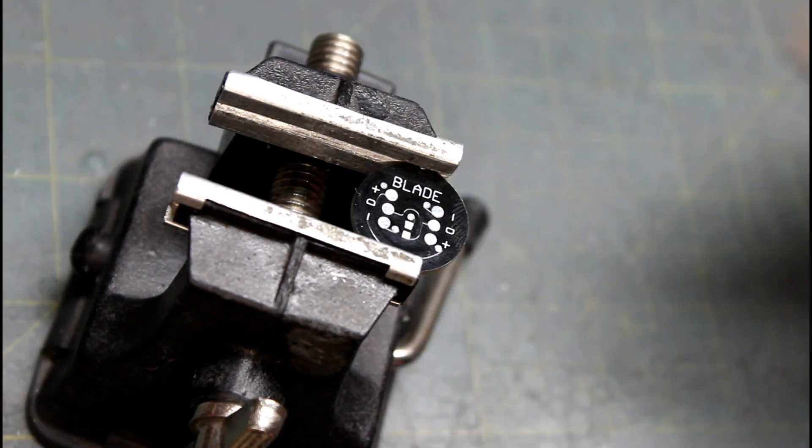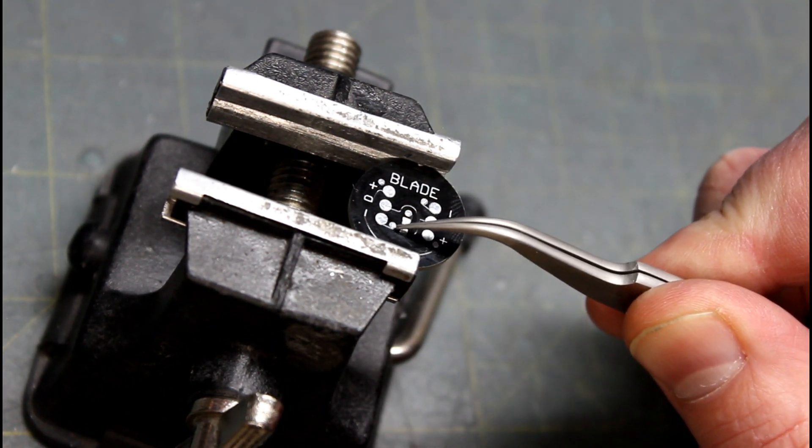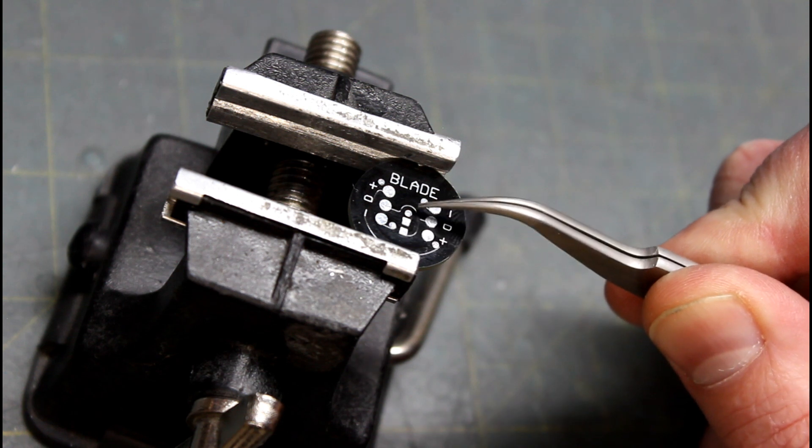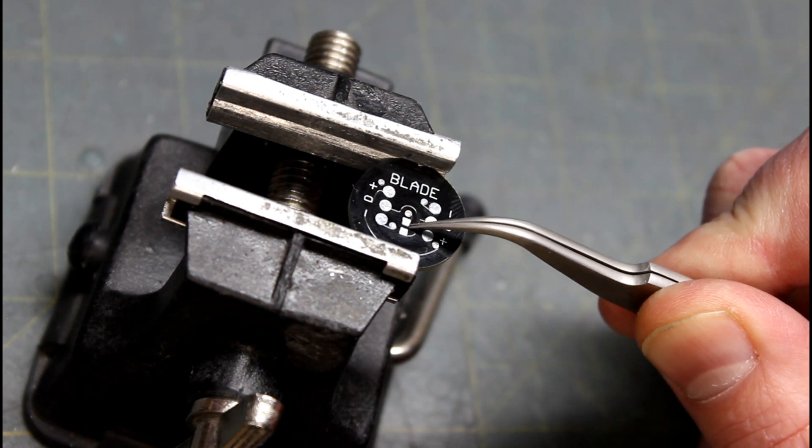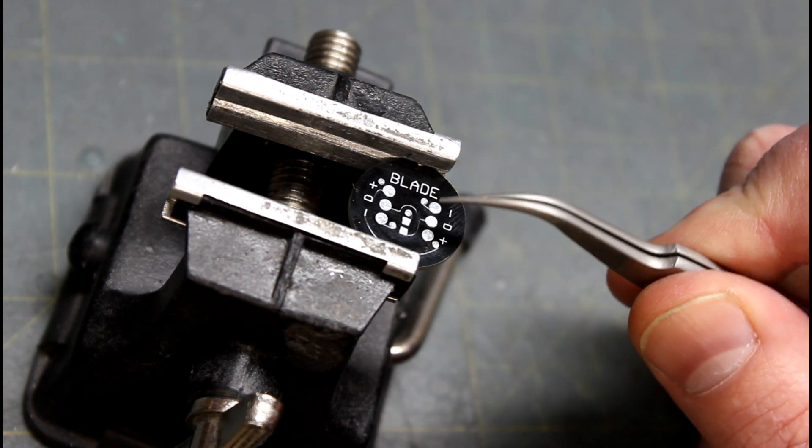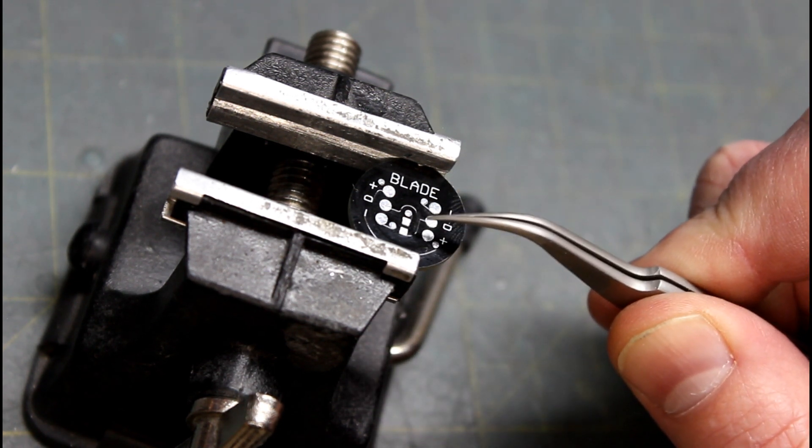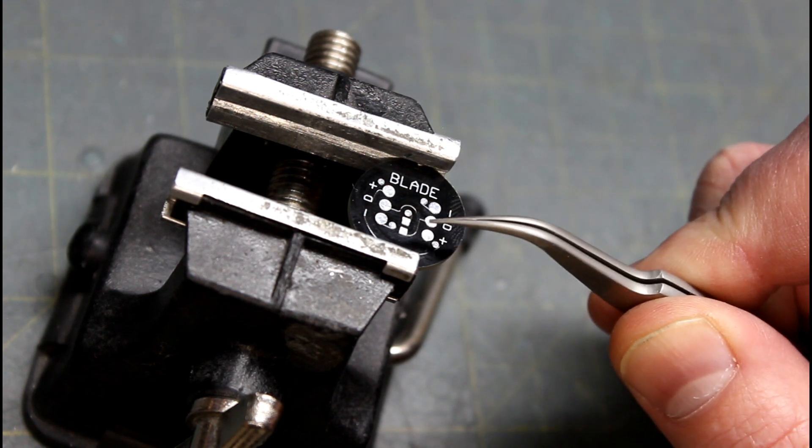But the first thing I'm going to address is this little space right here. There's these two squares, and if you don't bridge those two squares with something, be it a resistor or a connection of some kind, this isn't going to work. It's made for you to put a little SMD resistor in, and that's what I'm going to do first.